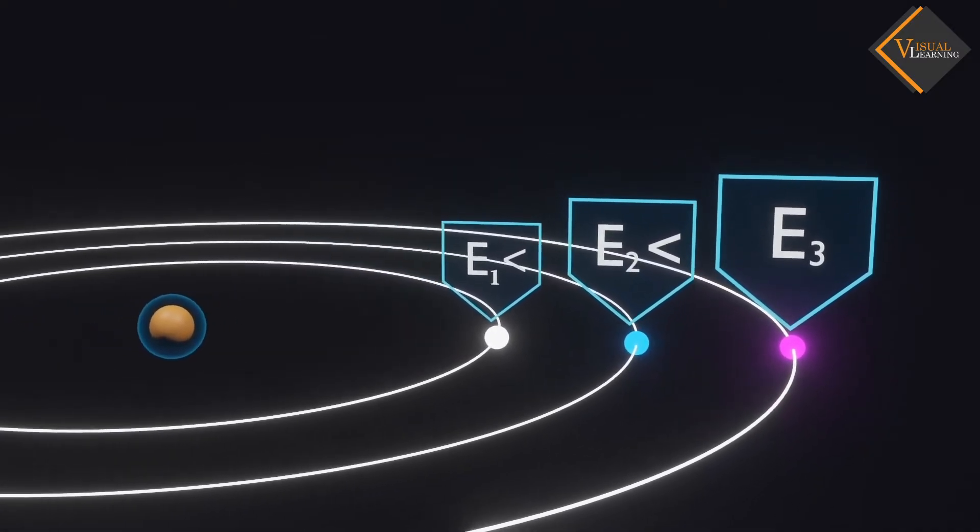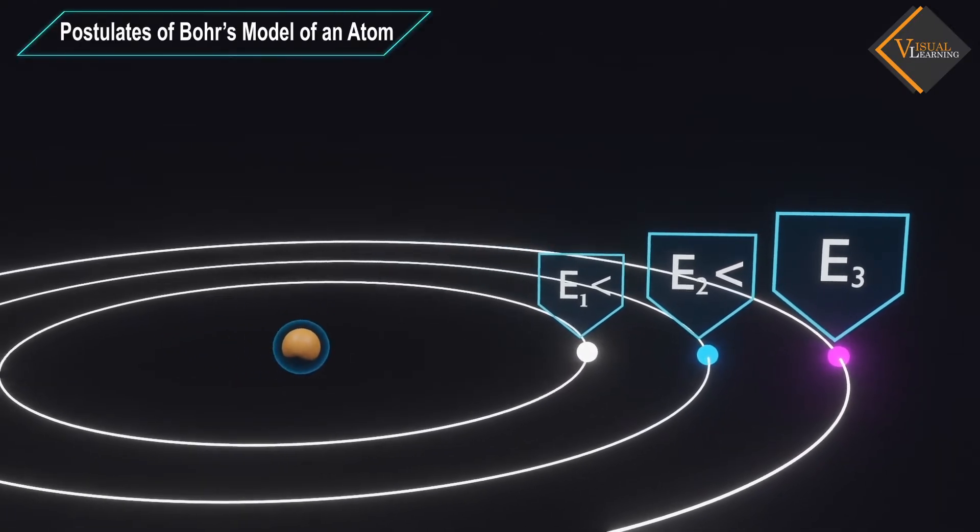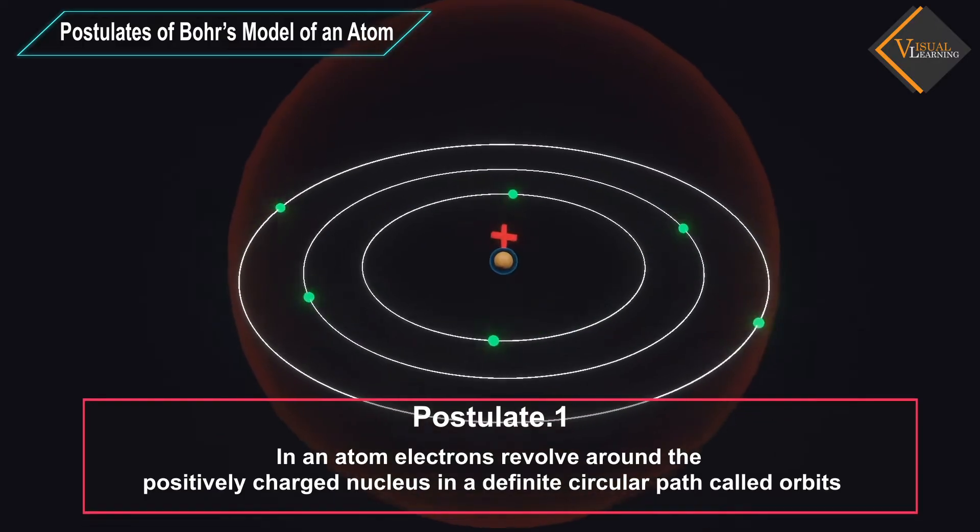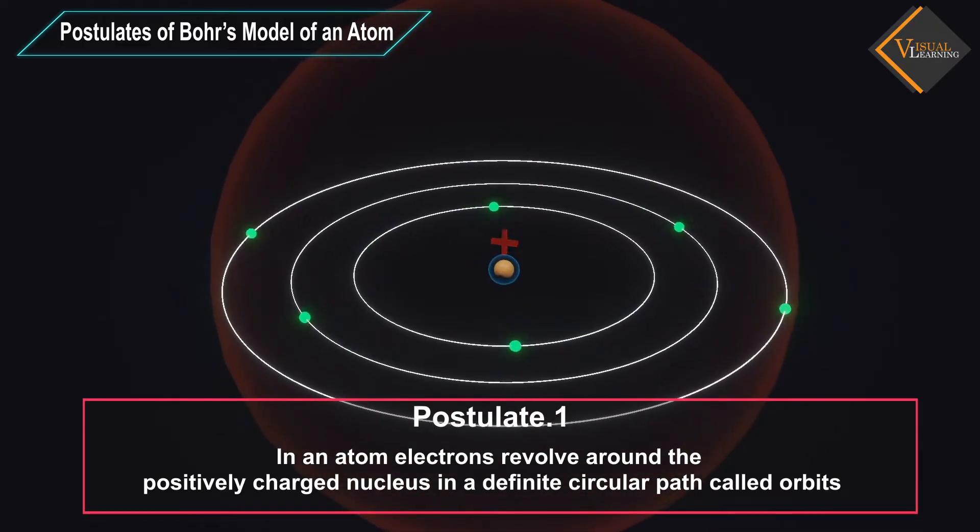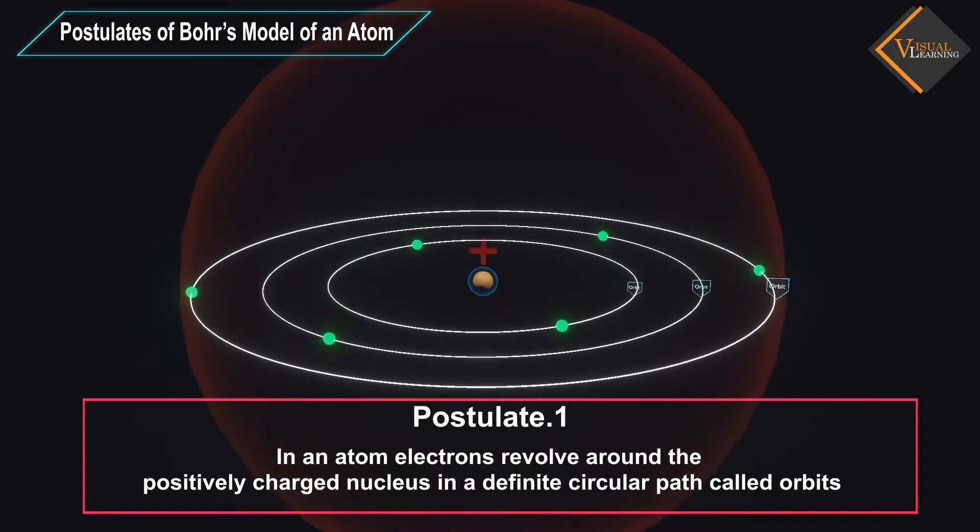Neil Bohr put forward the following postulates about the model of an atom. In an atom, electrons revolve around the positively charged nucleus in a definite circular path called orbits or shells.